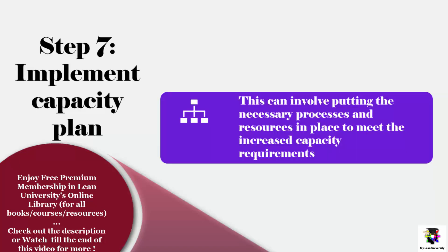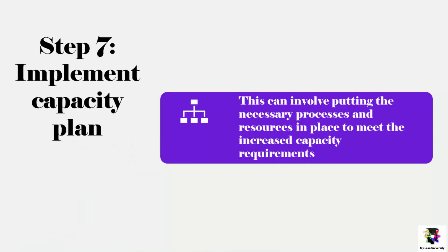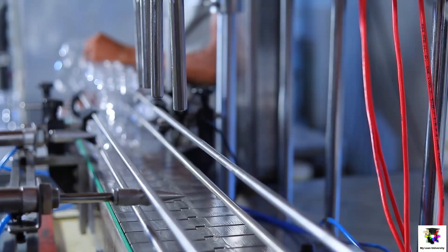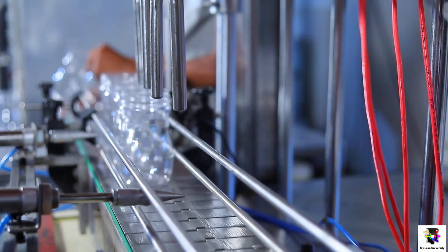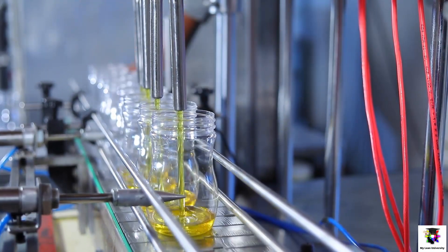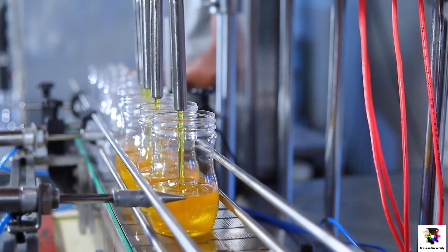Finally, in step number seven, we implement the capacity plan. Once the most feasible and cost-effective capacity options have been identified, the next step is to implement the chosen capacity plan. This can involve putting the necessary processes and resources in place to meet the increased capacity requirements. For example, a manufacturing company may need to hire additional staff, invest in new machinery, or make changes to the production process to meet the increased capacity requirements.